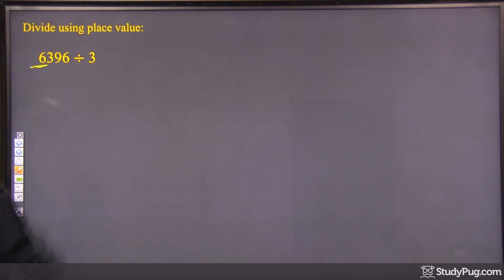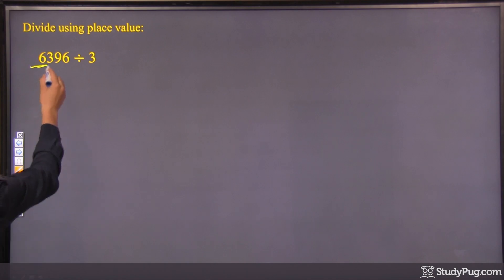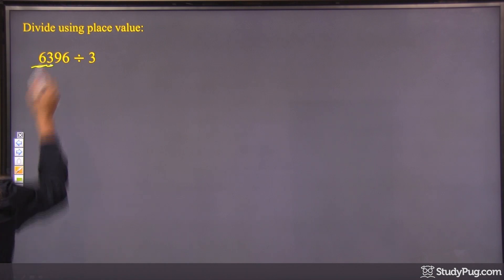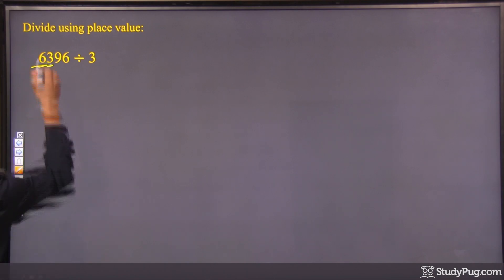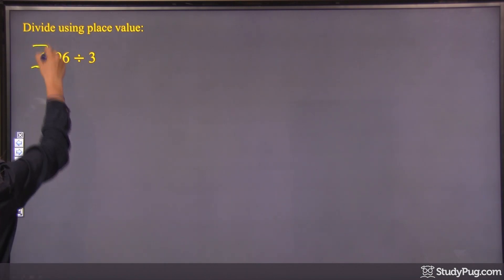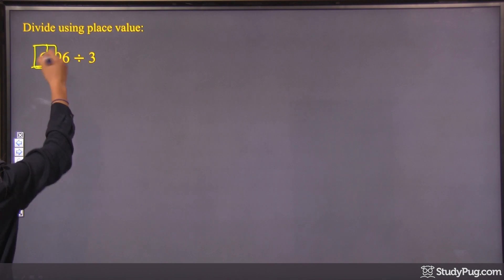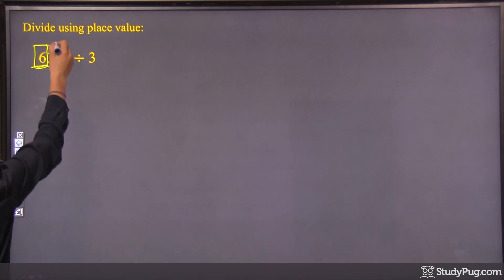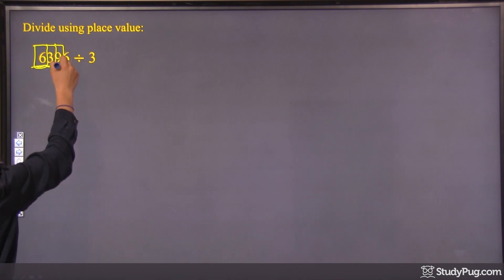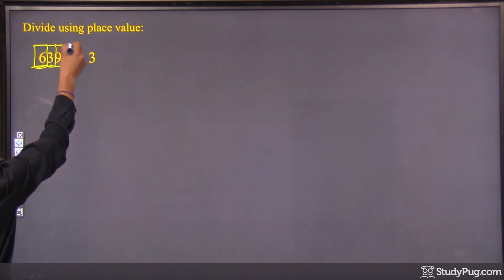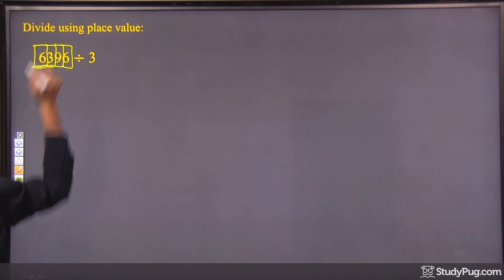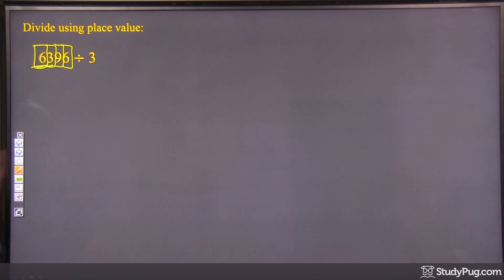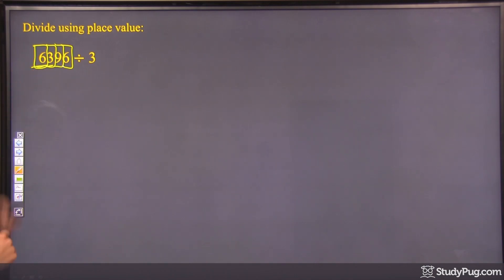6 — I know I can divide that by 3. 3 — I know I can divide that by 3, so I'll just box those. 9, I can divide by 3. And 6, I can divide by 3. So I'm going to split it up into four different parts.